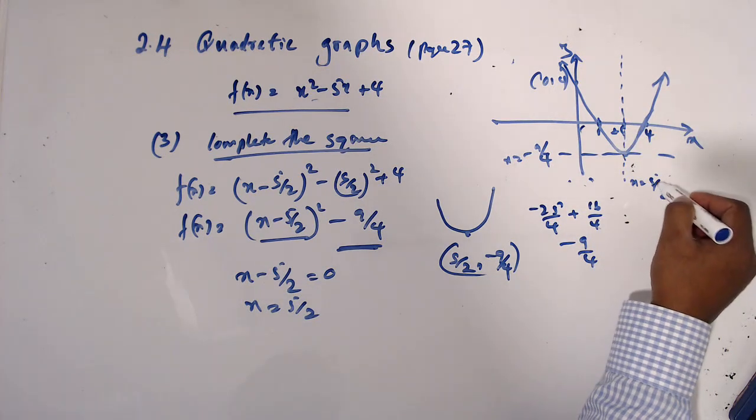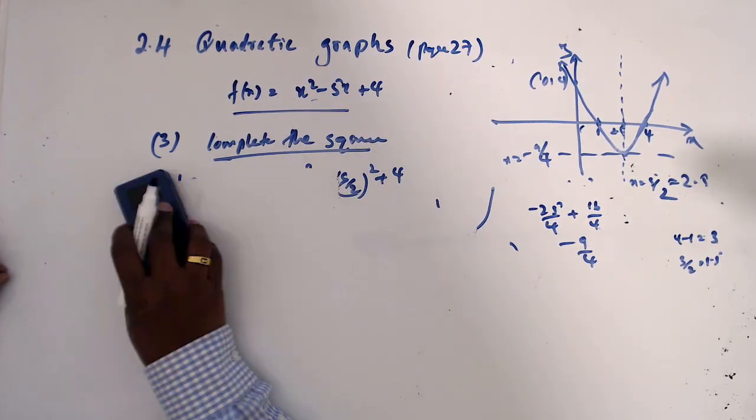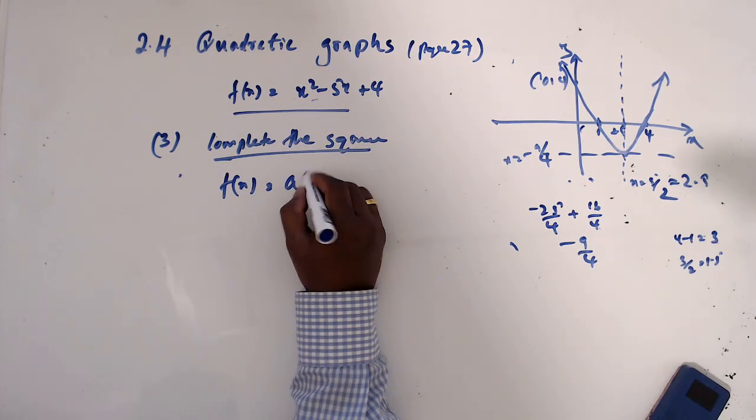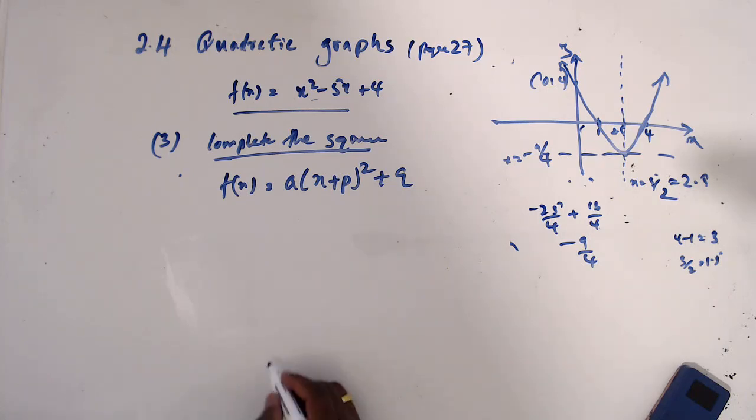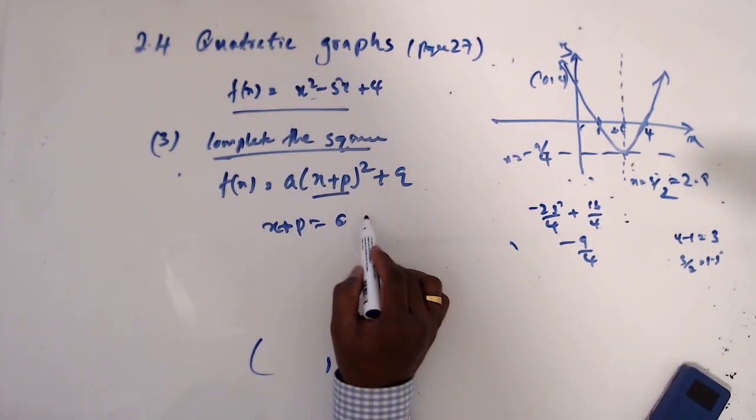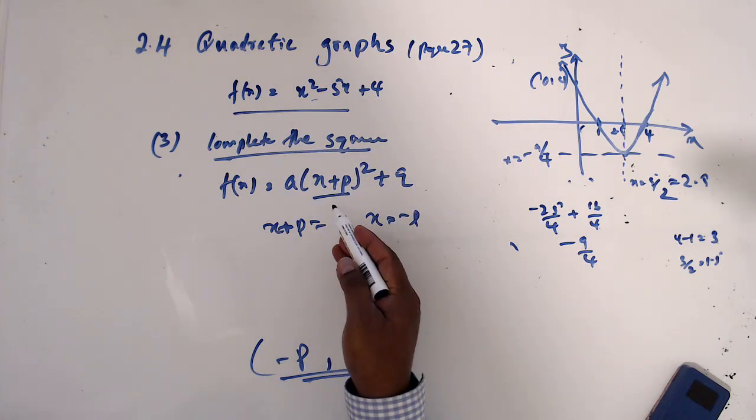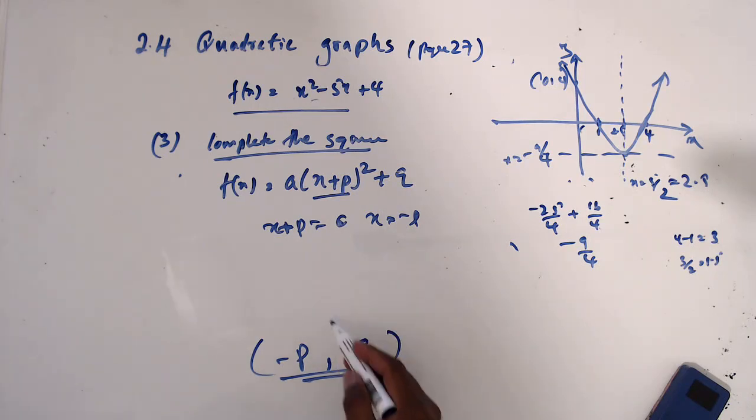Now I have to just show that if we have this kind of equation, f(x) equals a times (x plus p) squared plus q, what are the turning points? So the turning point is: I know the y value is q, and to find the x value, take this term and make it equal to 0, so x equals minus p. So that's how you have to find when you bring the quadratic expression into a complete square. After completing the square, you can find the minimum, the turning point like this.